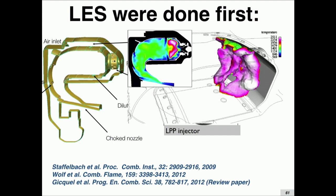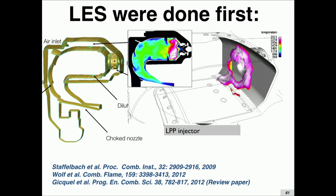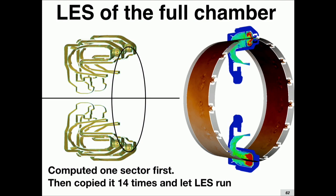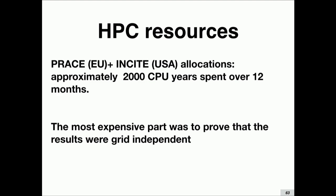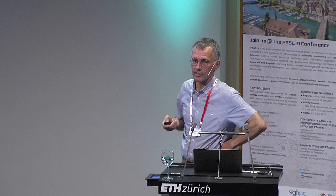We did the Large Eddy Simulation about ten years ago. We actually simulated a helicopter engine — we started by doing one sector here and then copied it 14 times, went to a Blue Gene computer. We needed about 100 million CPU hours. The most expensive part was to prove that this simulation was not sensitive to the grid, which is one of the conditions to prove that it makes sense. The simulation showed that if you look at the velocity over time, instability starts developing and reaches an oscillation at the right frequency and amplitude compared to the real engine, which was operated at Safran Helicopter Engines in France.